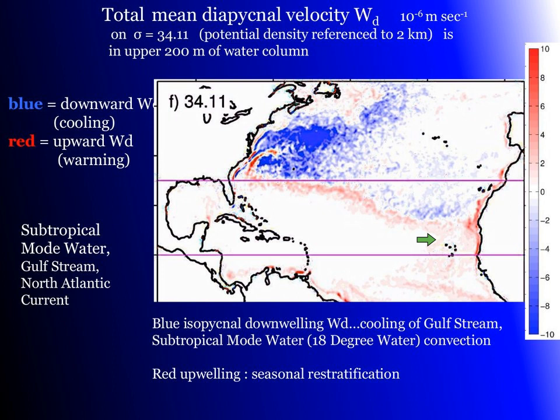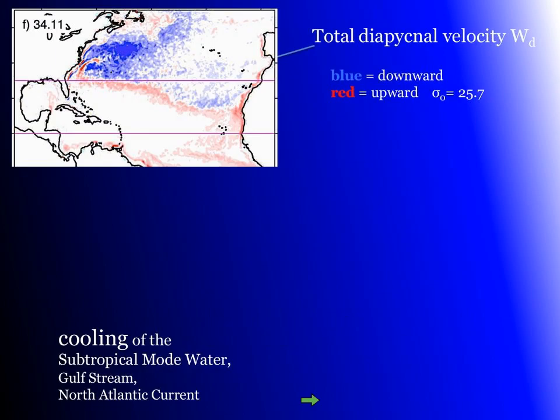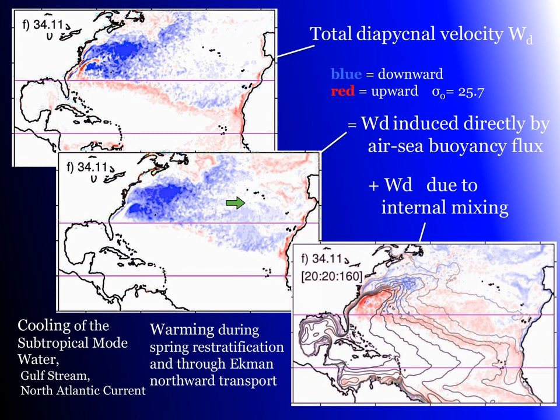We now separate this into the total — which is what we just saw — equal to the sum of the thermodynamic air-sea buoyancy flux-induced surface-forced component in the middle, and the internally-mixed remainder at lower right. You see largely blue in the surface-forced part — largely cooling and sinking. But the return circuit is spread diagonally across the subtropics: upwelling due to internal mixing. This red upwelling is warming during spring re-stratification and also involves the northward Ekman transport — those two combined effects.